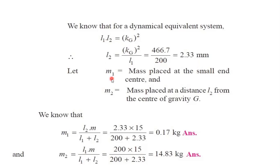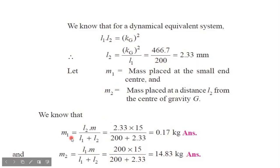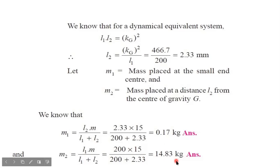Bringing L1 to the denominator and substituting all known values, we get L2 as 2.33 mm. M1 is the mass placed at the small end center and M2 is the mass placed at a distance of L2 from center of gravity G. Substituting L1, L2, and M into the respective formulas, we get M1 as 0.17 kg and M2 as 14.83 kg.